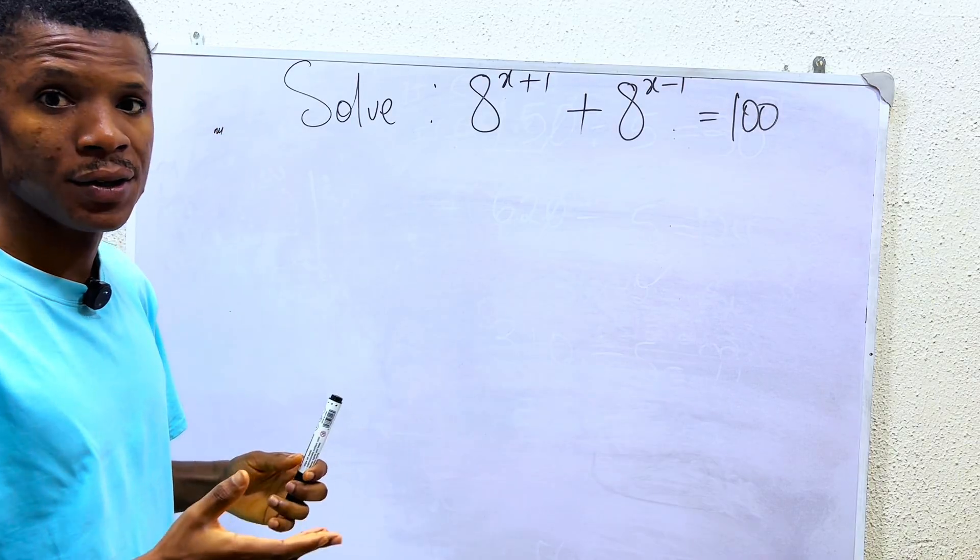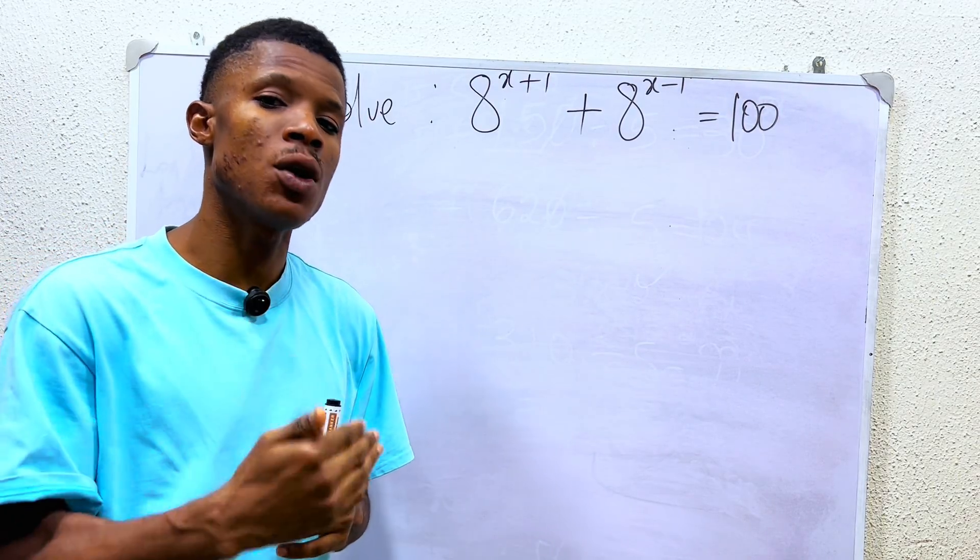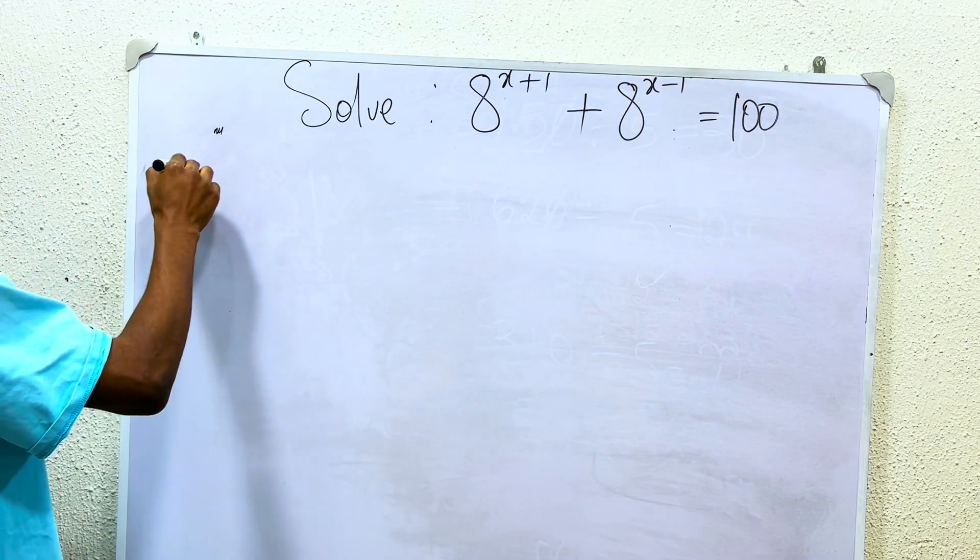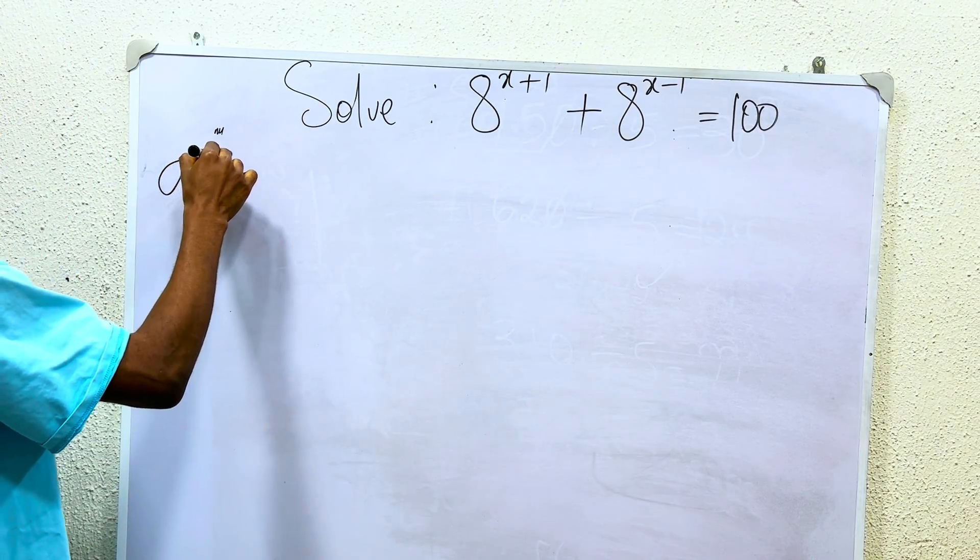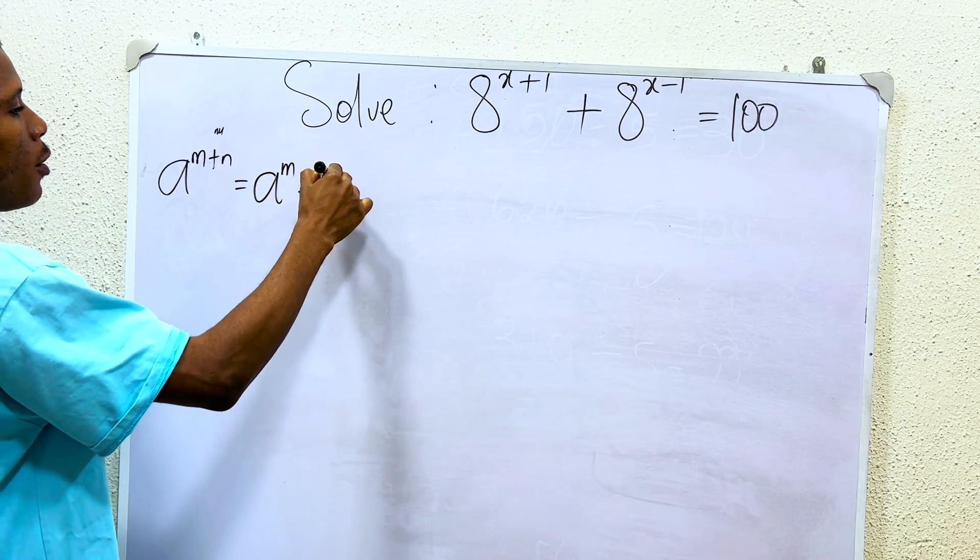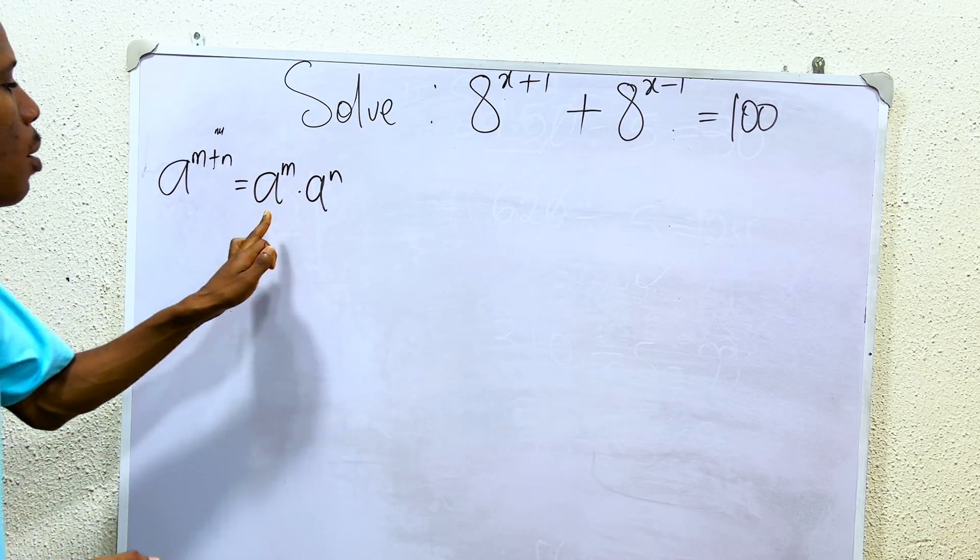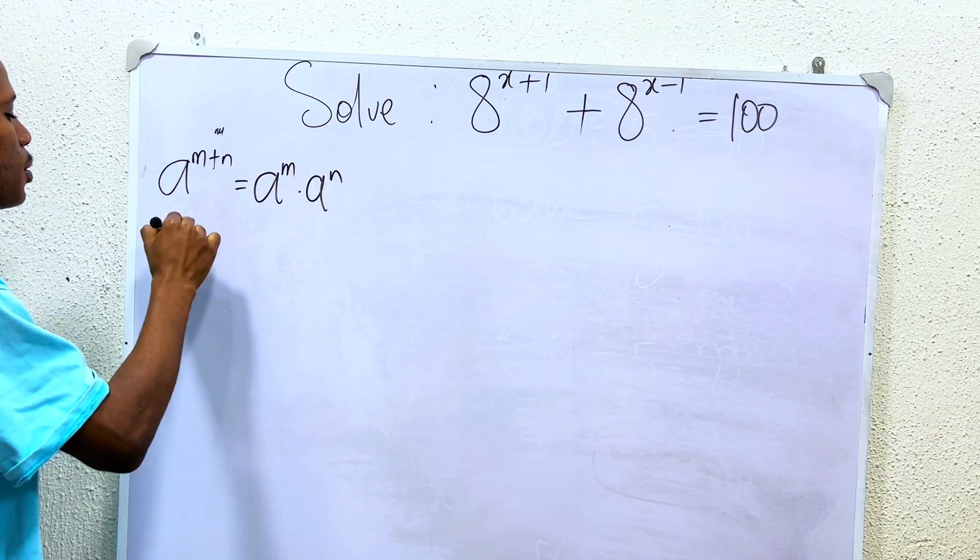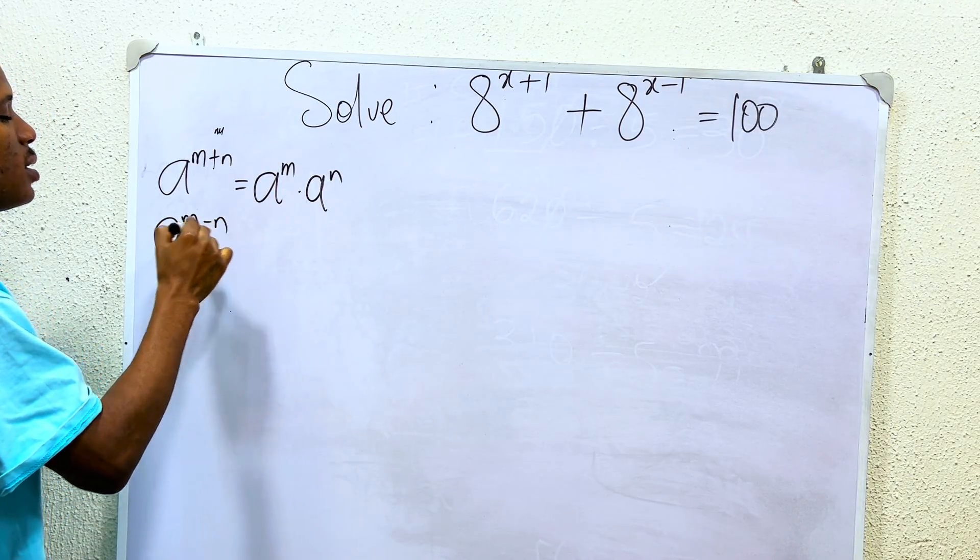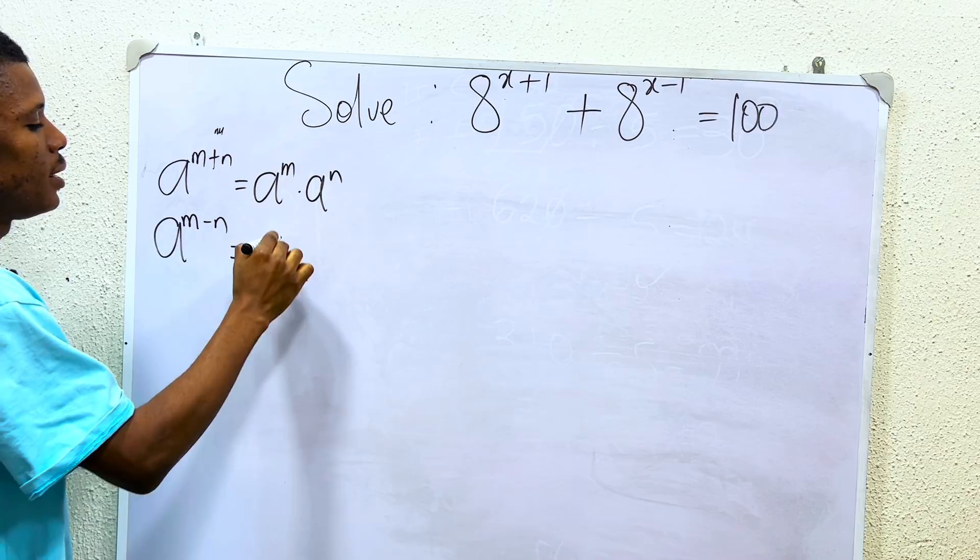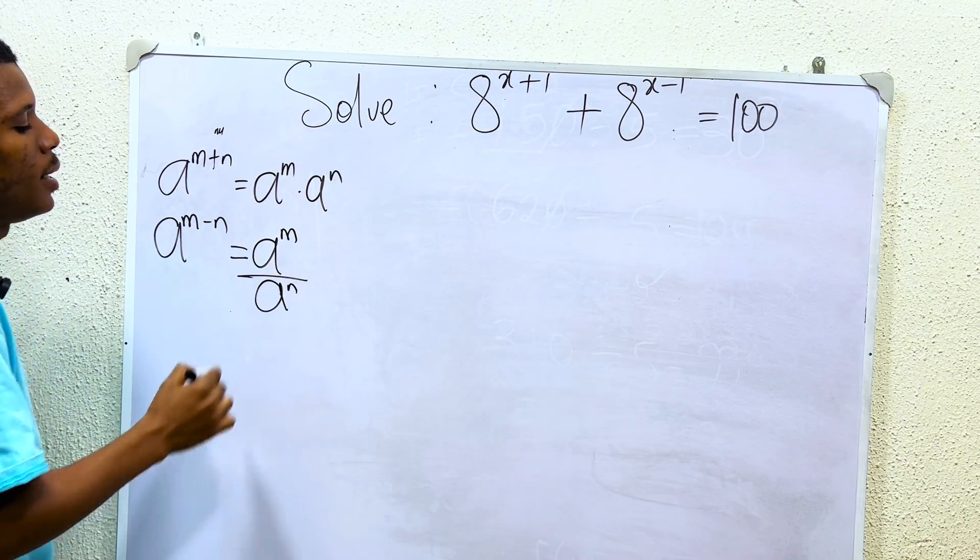For us to solve this is very simple, but before then, you must understand some of the laws of exponents. The first one is, for instance, if you have a to the power of m plus n, the answer is a to the power of m times a to the power of n. Whenever you are multiplying in the same base, you are adding the powers. Then, if you are subtracting in the same base, all you have to do is divide: a power of m over a power of n.